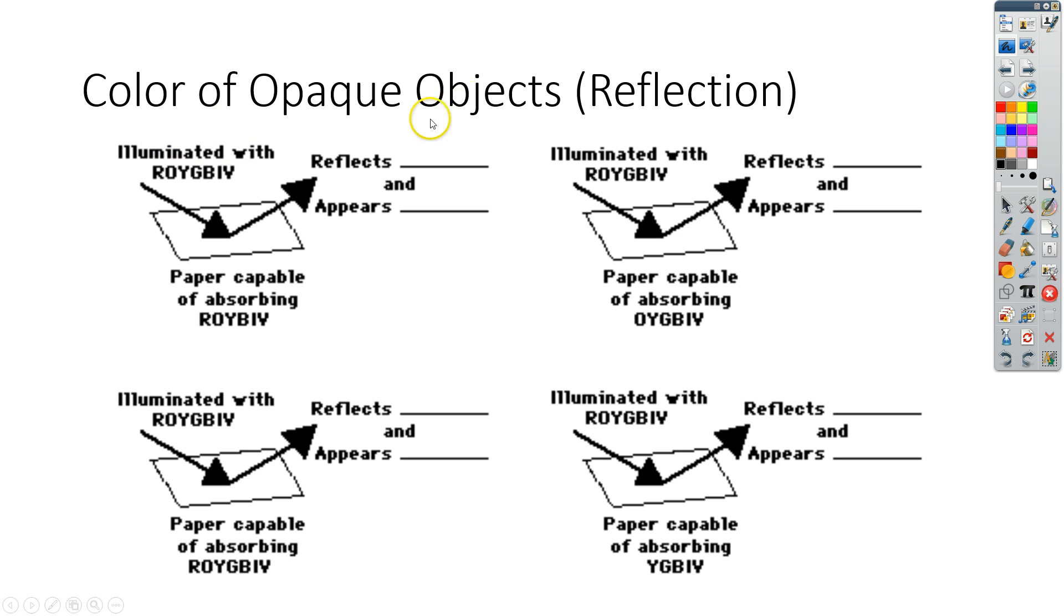The color of opaque objects. Remember we said that opaque objects reflect light. And what we're going to do is look at pieces of paper. Paper is opaque. It does reflect certain colors of light, but it also absorbs other lights.